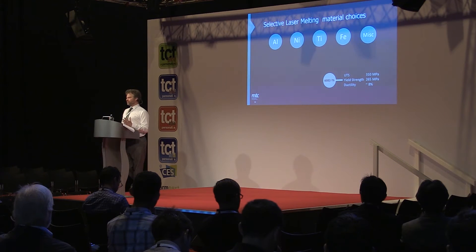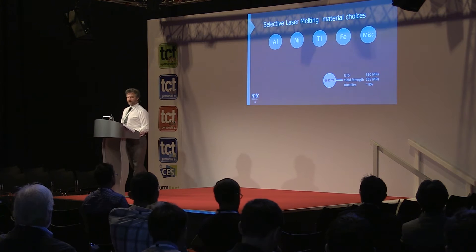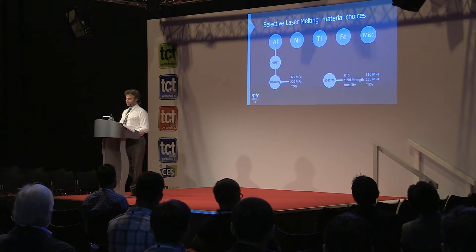For selective laser melting, there are broadly five material groups available: aluminium, nickel, titanium, the steels, and miscellaneous ones like precious metals, copper, and cobalt chrome. The original component was aluminium alloy 6082. Conveniently, one of the aluminium alloys available in SLM is the casting alloy AlSi10MG, which had similar properties to the original component, so that was used to inform the algorithm about material properties.